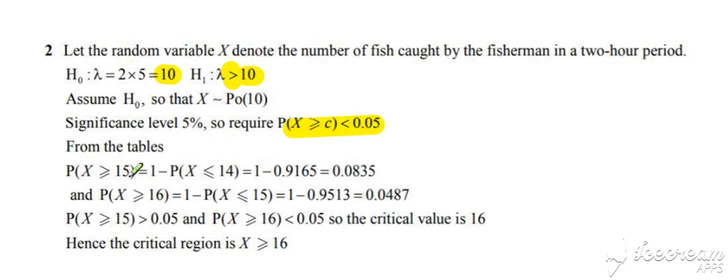You'll see that greater than 15 gives us 0.08 and greater than 16 gives us 0.048. So this one does fall below. That's the one that we want. And therefore, your critical region for the test is X is greater than or equal to 16. That's your critical region.